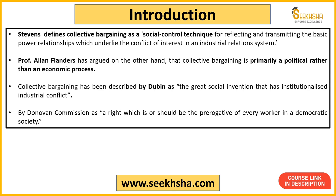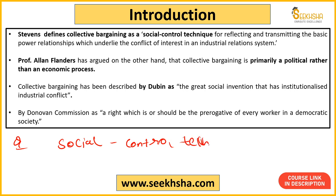Now we'll look at some definitions to get clarity. And these can directly appear as exam questions — for example: 'Which among the following defined collective bargaining as a social control technique?' Options might be: A — Stevens, B — Alan Flanders, C — Debbyn. Or the question could ask who originated the term collective bargaining. So let's understand each definition.